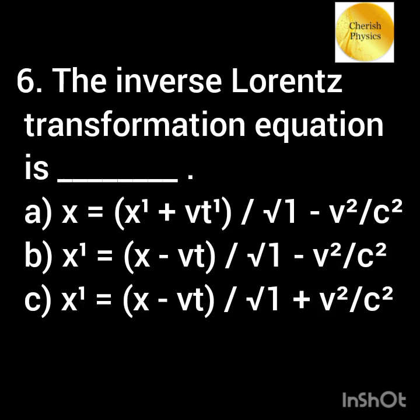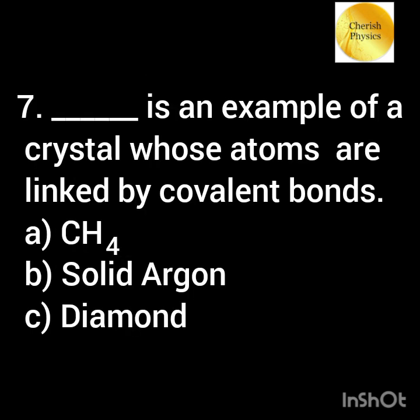The inverse Lorentz transformation equation is dash. Which of the following is an example of a crystal whose atoms are linked by covalent bonds? Option A: CH4. Option B: solid argon. Option C: diamond.